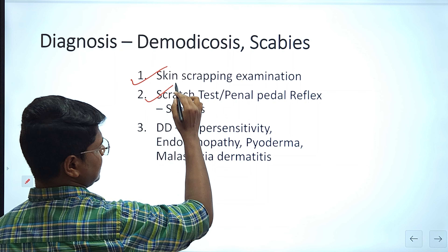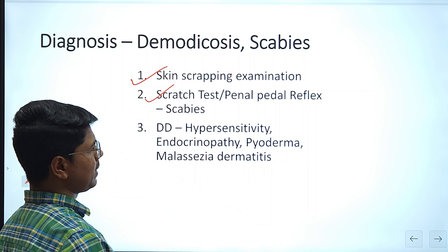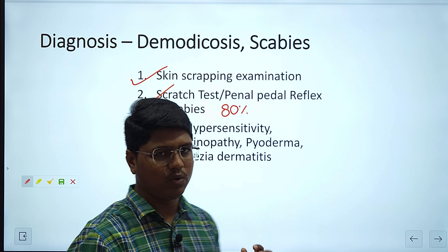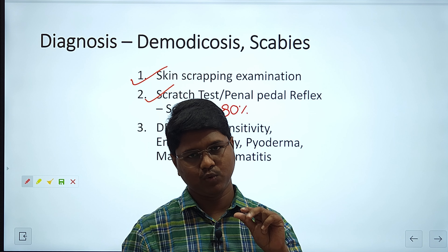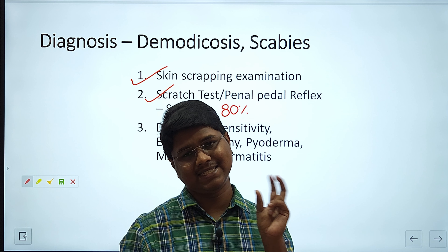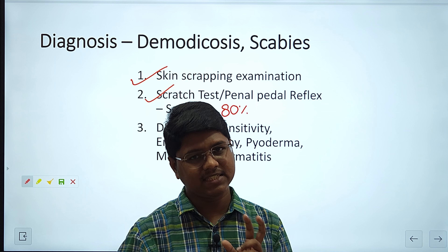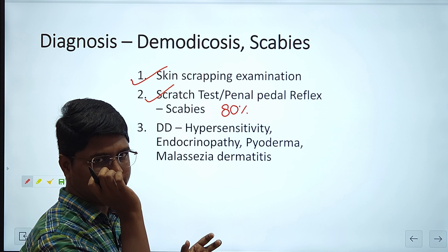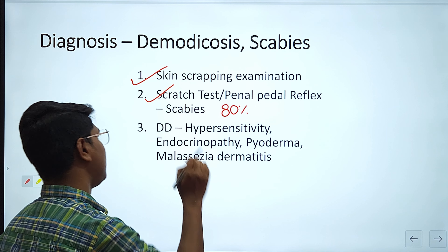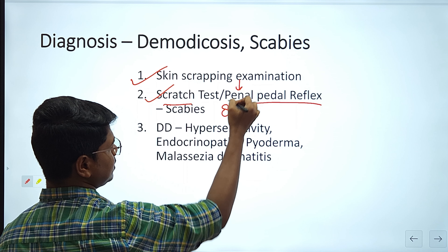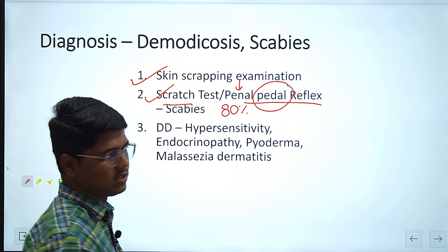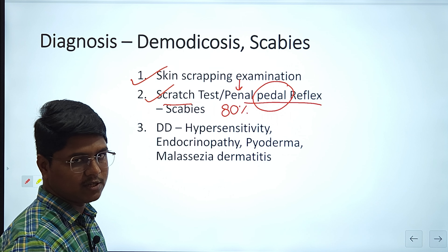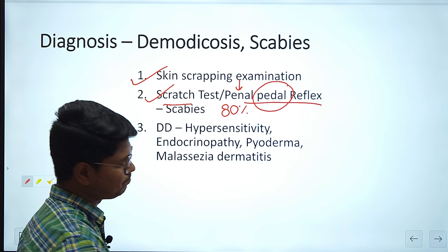Another diagnostic method is the scratch test or pinnae-pedal reflex test, which can be applied for scabies with 80% accuracy. Simply hold the ear between your fingers and move them — it will elicit a scratch reflex: the animal will try to scratch that part and move its hind limb. This is known as the scratch test or pinnae-pedal reflex. It has 80% accuracy to diagnose scabies. If you are not finding the lesion under the microscope, you can do this test.